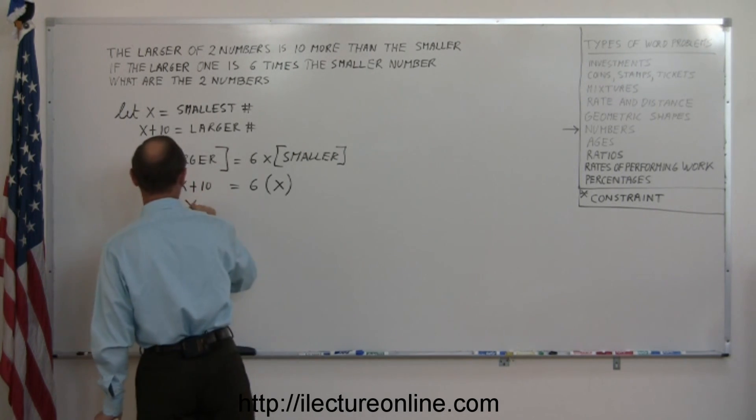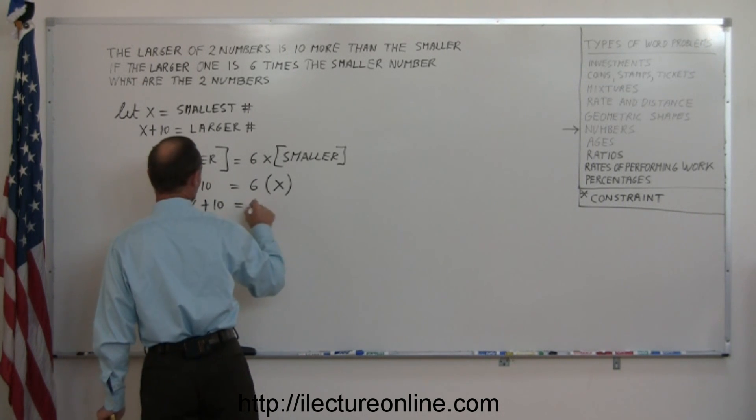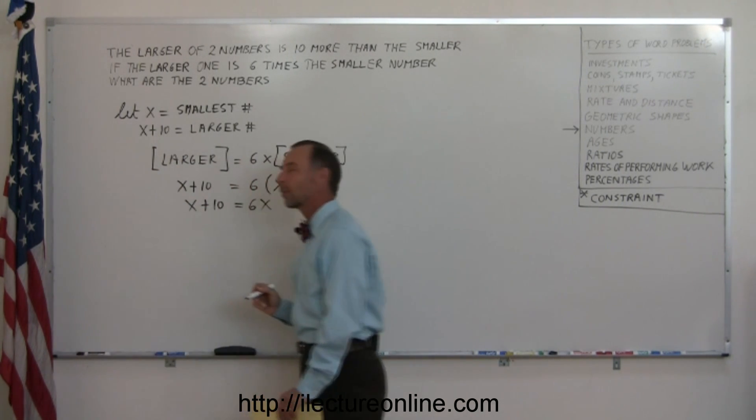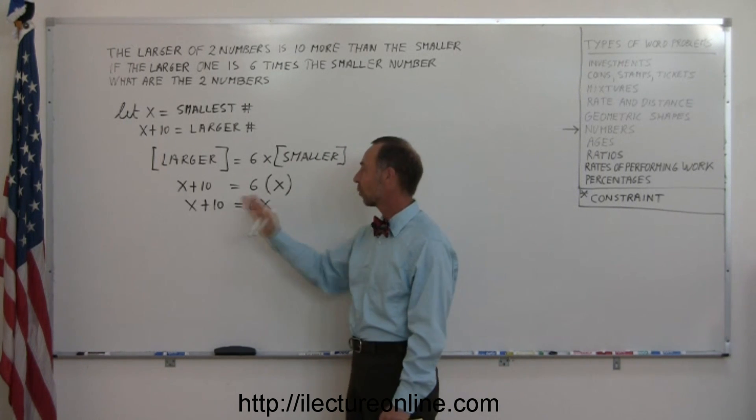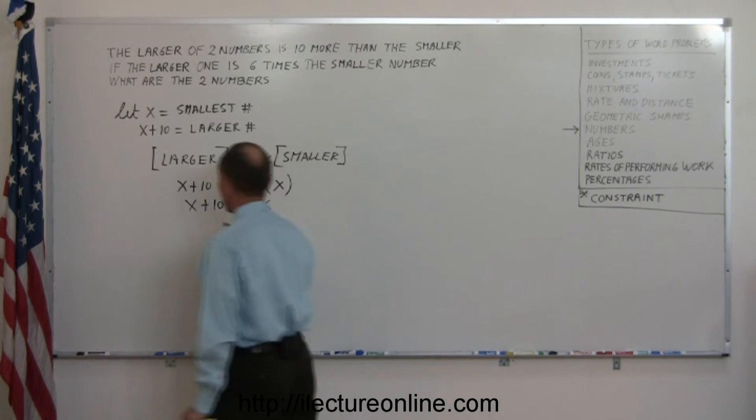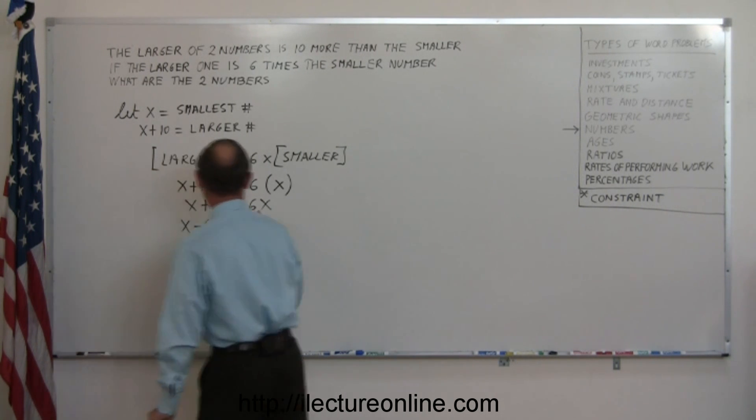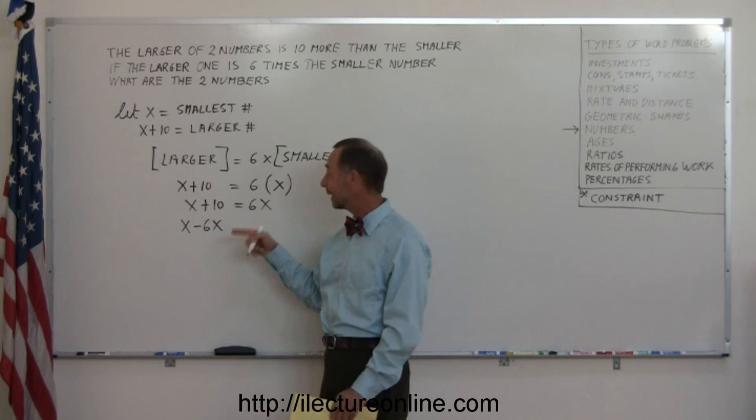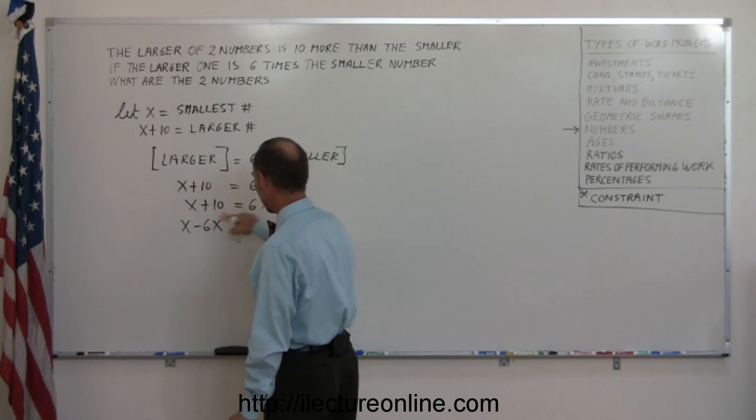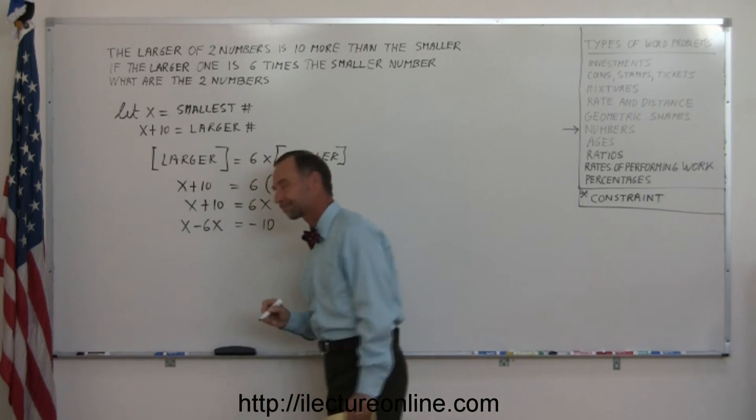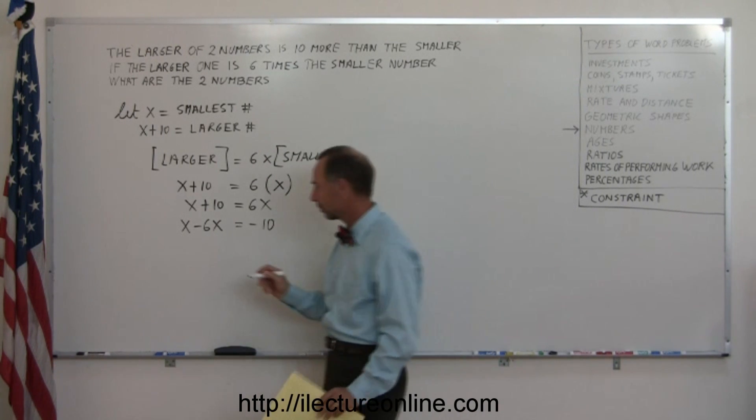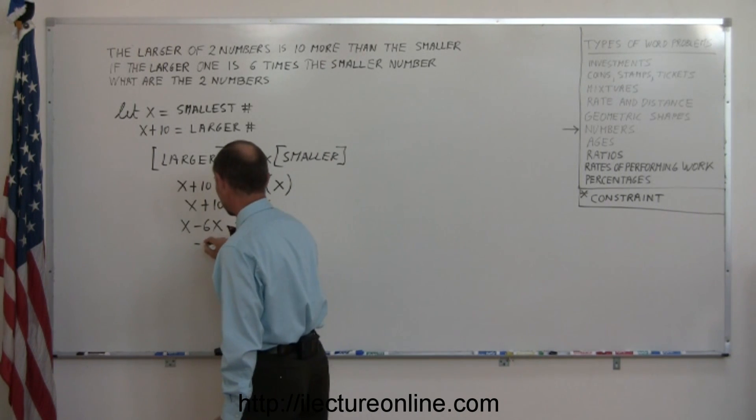So we end up with x plus 10 equals 6x. The first thing we want to do is bring all the x's to one side, all the numbers to the other side. So we have x minus 6x. Remember, whenever you cross over the equal sign, you get a negative sign. So instead of positive, it becomes negative. The 10 goes to the other side, becomes a minus 10. Now you combine like terms on both sides. x minus 6x is minus 5x equals minus 10.